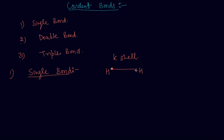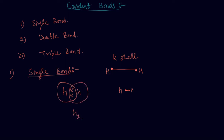This shared electron pair constitutes a single bond between the two hydrogen atoms. This is how a single bond is formed — the two hydrogen atoms combine together to form H₂ gas. This bond is called a single bond between two hydrogen atoms.